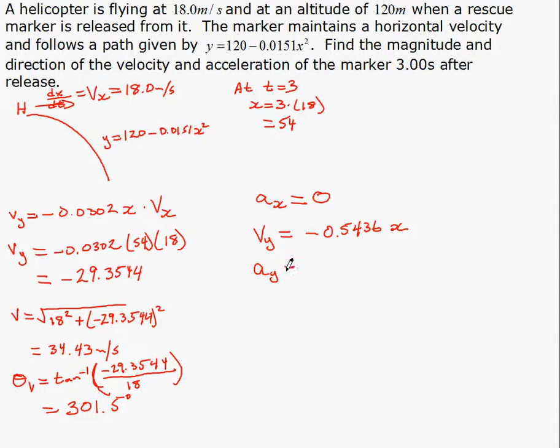So the acceleration is the derivative of that. The derivative of that is negative 0.5436. The derivative of x is dx by dt, or v of x, which we know is 18. So 18 times that gives us negative 9.78, and that's going to be meters per second squared.